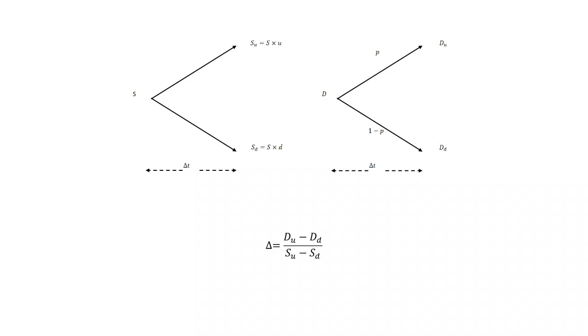I'm setting up here a very generic case. The stock starts at some price S. It can go up to S sub U, or it can go down to S sub D, and that's over some time delta T. We've got some option. We know its value at time delta T or T plus delta T in the future. We call the value if the stock goes up D sub U, and the value if the stock goes down D sub D. We've calculated these probabilities.